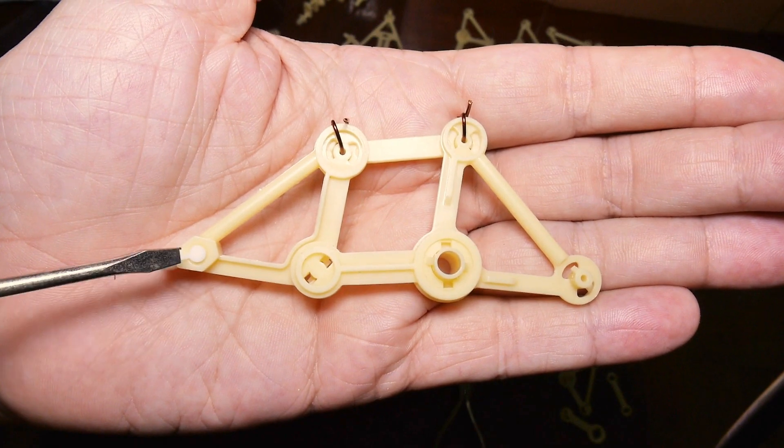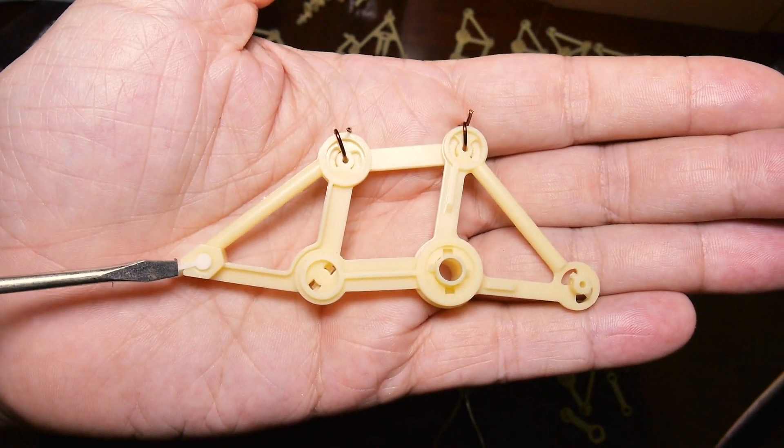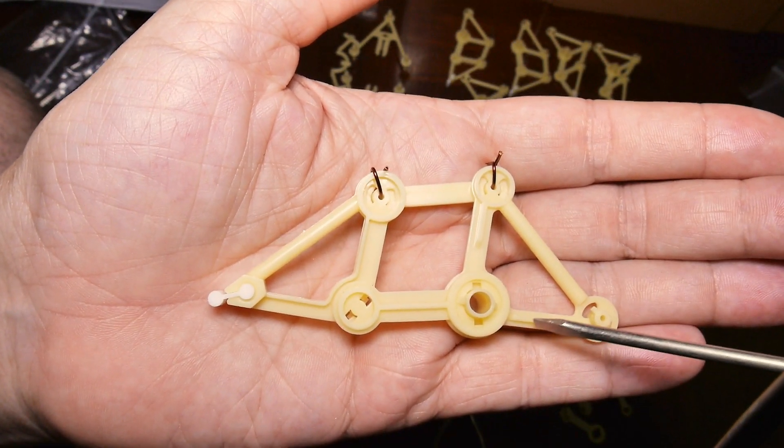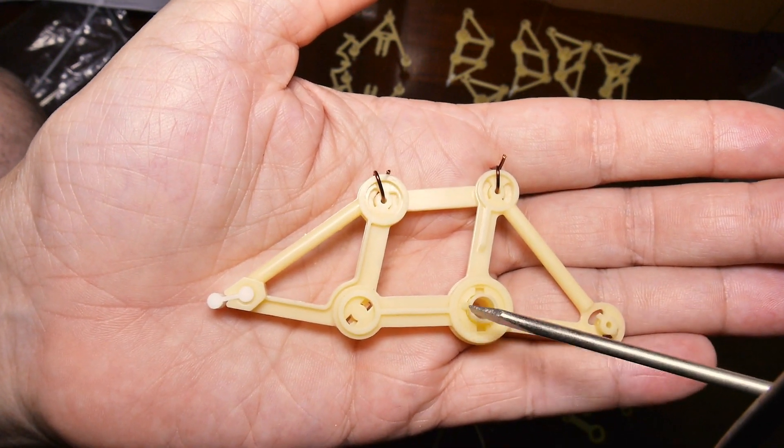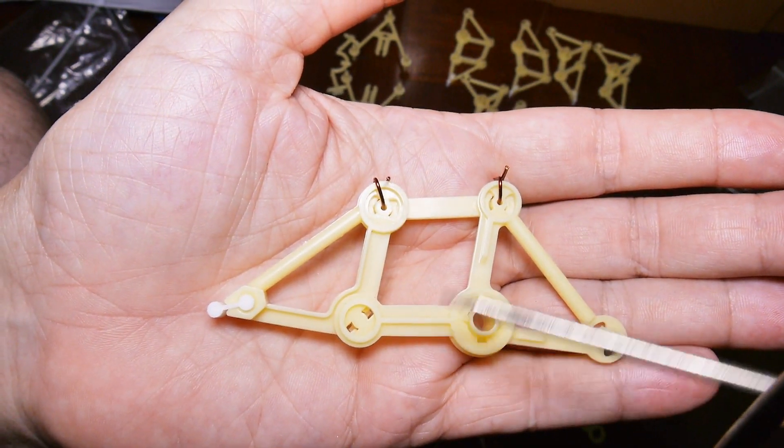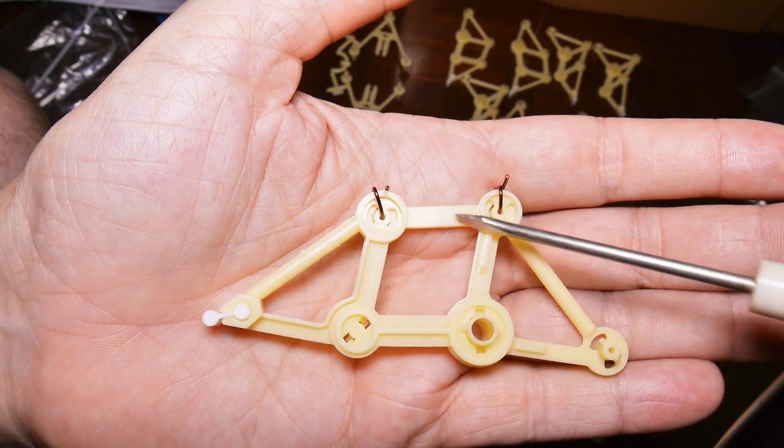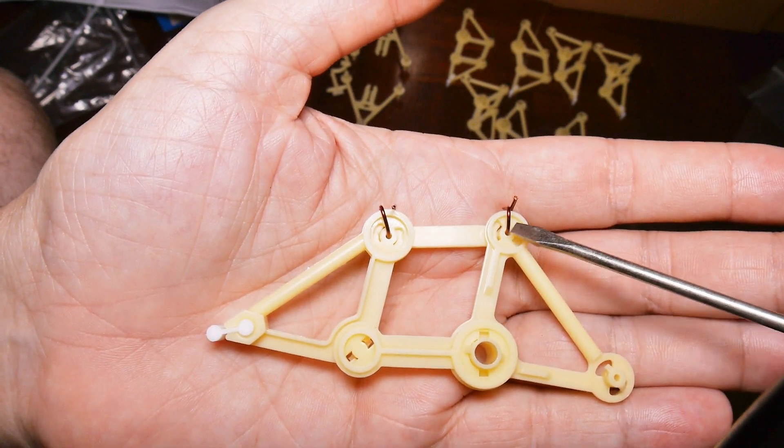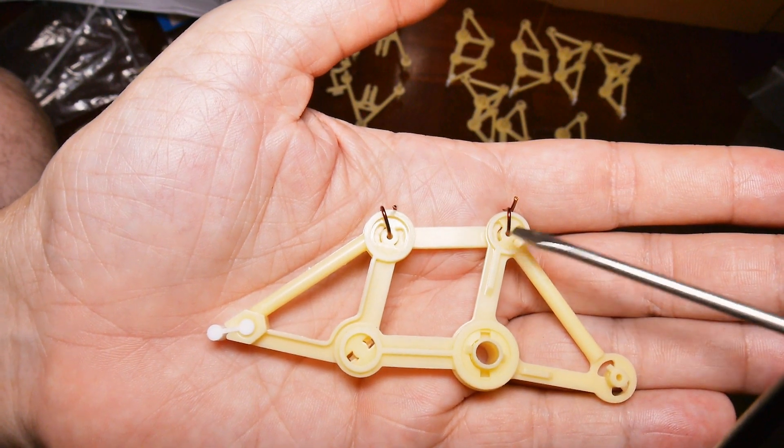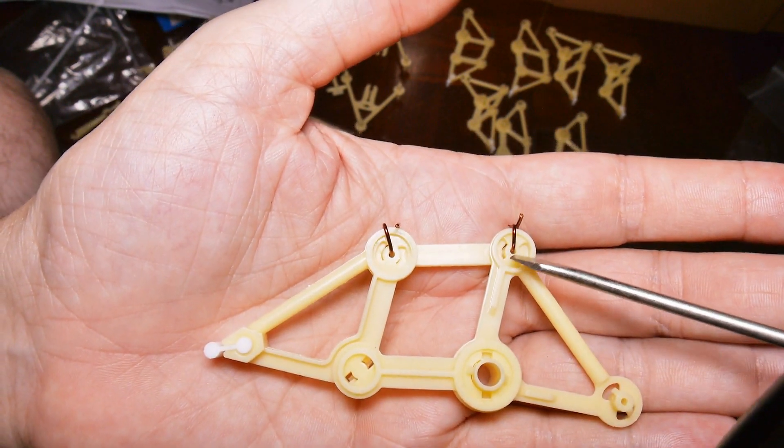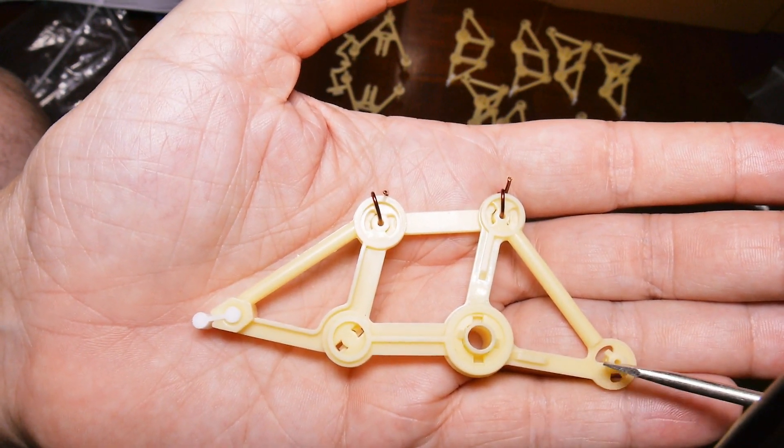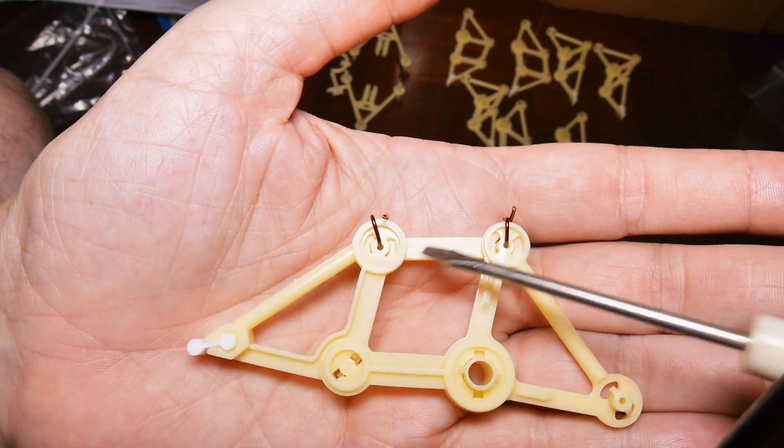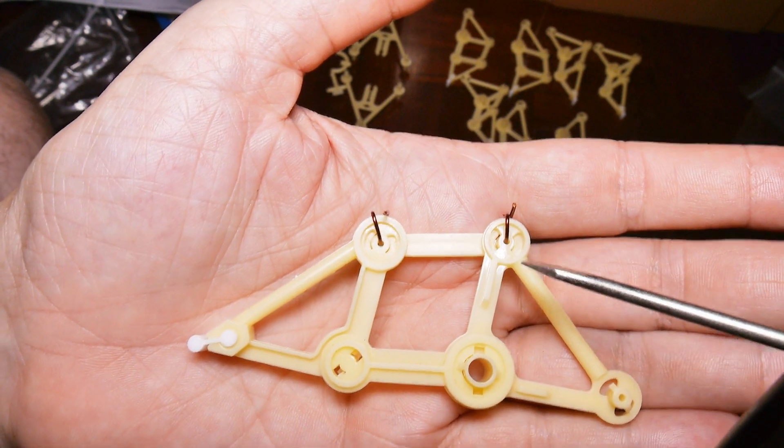This is one assembled leg. This is the A component. You can recognize that by the foot right here. The piece over here, this triangle, is the B component. This large connecting rod right here is the C component. And this smaller connecting rod is the D component. Now, the first trick here is to get yourself some stiff wire.